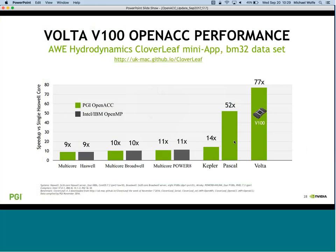Taking the AWE Cloverleaf hydrodynamics code - the first eight lines show performance on Haswell, Broadwell, Power 8, Kepler, Pascal. Volta is now 1.5x faster than Pascal. This was on a pre-production x86 plus Volta system, so we expect the production version, particularly on Power, to be even a little bit faster. We're quite excited by the performance potential of Volta.